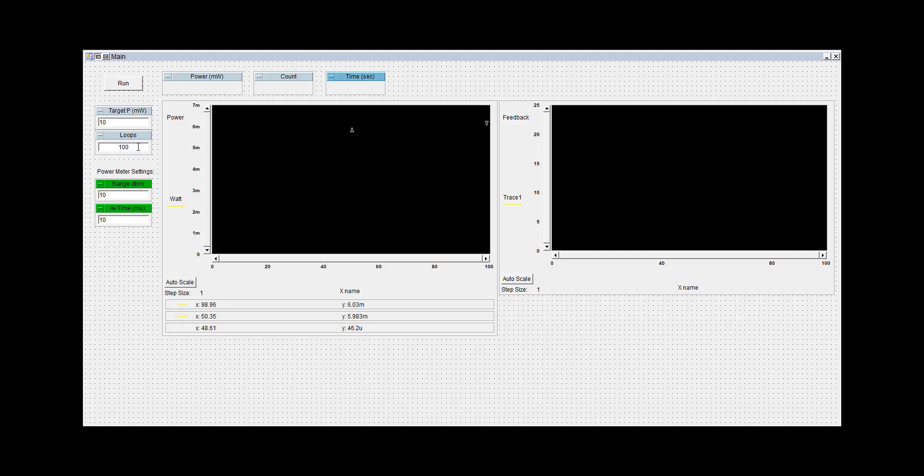We'll run 100 loops in this measurement. And the power meter has been set to a range of 10 dBm or 10 milliwatts maximum and has an averaging time of 10 milliseconds. So we'll go ahead and start the measurement.